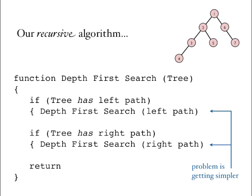When we get to a leaf node — such as nodes 4, 5, or 7 in the illustration — we return. This is the termination condition: there are no paths left to search from the leaf node, so all we can do is return. When we return, having looked in the left path and right path where they existed, we've finished searching that node. We then return back up the calling stack until we're at another location that has unexplored paths.